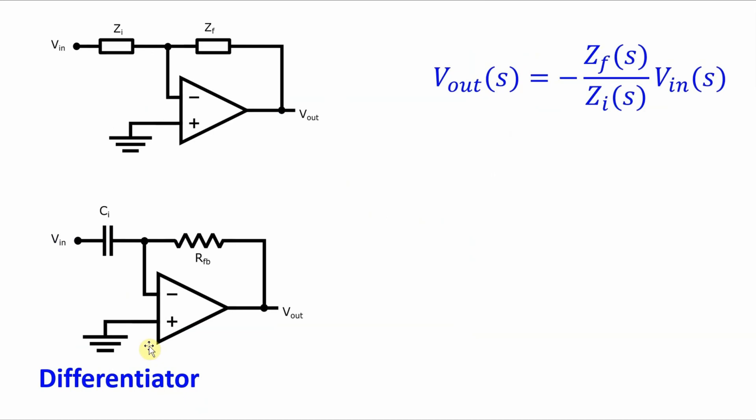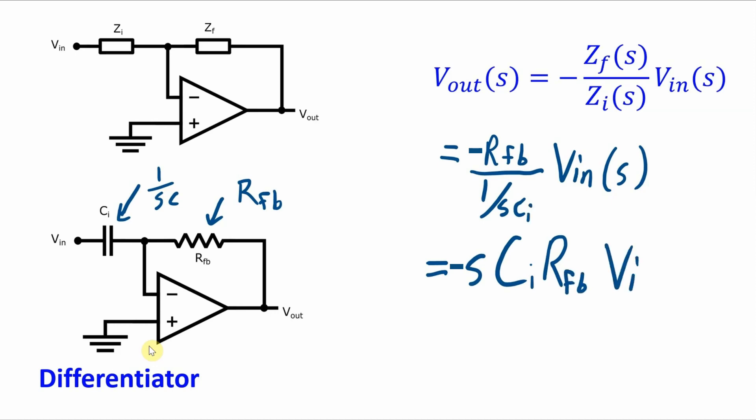If we apply this analysis to the differentiator, we have the zin is made up of this capacitor so that zin now is 1 over sc, and the feedback resistance or the feedback impedance is simply r or rfb. So what we get when we substitute those two numbers into our expression for Vout here, we get rfb over 1 over sc—there's my zf and there's my zi—times Vin of s, which is equal to scr, I guess that's ci isn't it, fb times Vin of s.